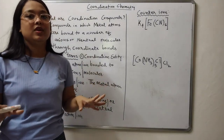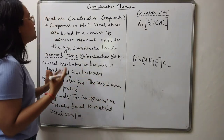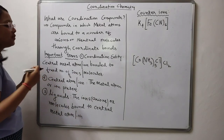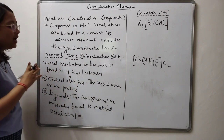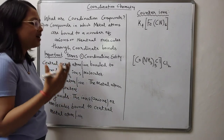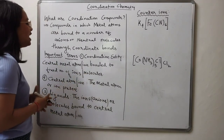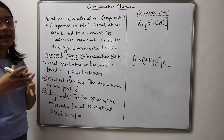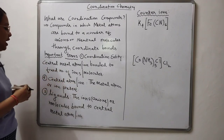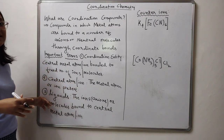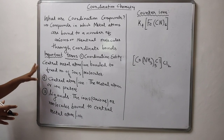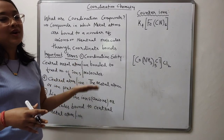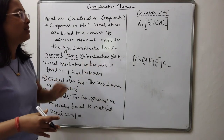In my previous video I have already introduced the term coordination compounds, and along with that we looked at three more important definitions — the coordination entity, the central metal atom or central metal ion, and ligands. If you haven't watched that video, please do watch it and then come back to this one.